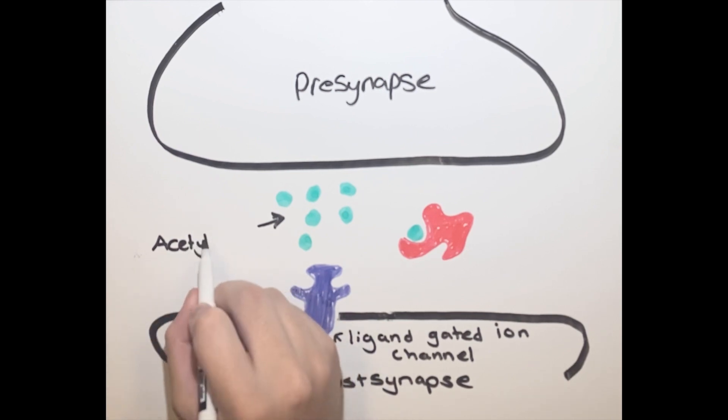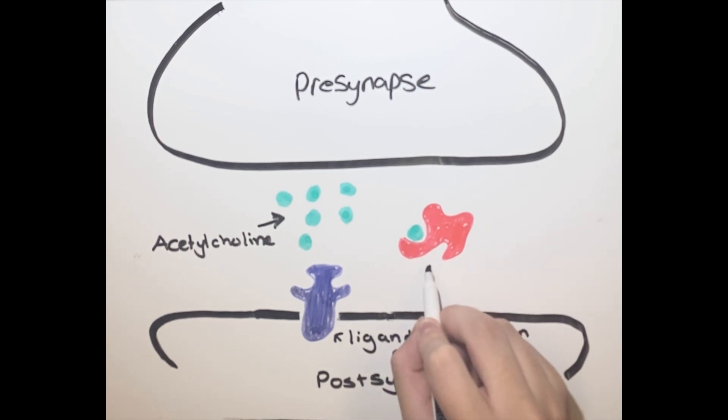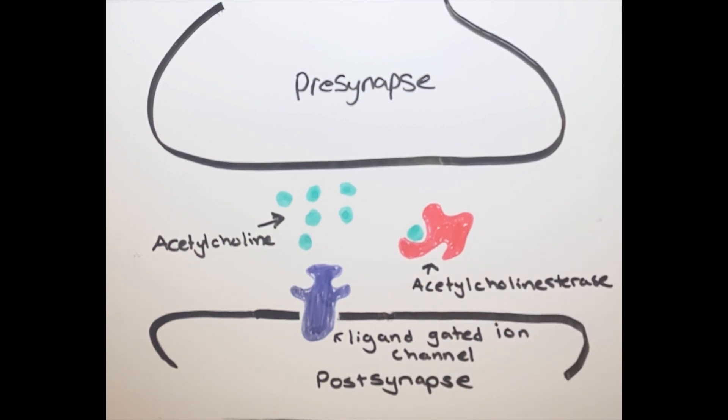The first process is enzymatic cleaving, which will actually break apart the neurotransmitter, and this is done through enzymes that float around the synaptic cleft. These enzymes are designed so that their binding site has a specific configuration to correspond to a certain neurotransmitter. So in our case, where our neurotransmitter is acetylcholine, the enzyme that will be responsible for the cleaving is acetylcholine esterase.